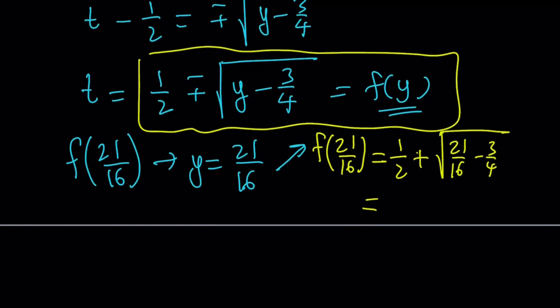This is 21 minus 12, which is 9 over 16. So that's going to be 3 fourths when I square root it. And then when you add these, you're going to get 5 fourths. So it looks like f of 21 over 16 can be 5 fourths, or can it? We'll see.